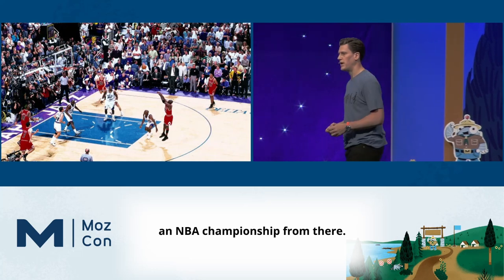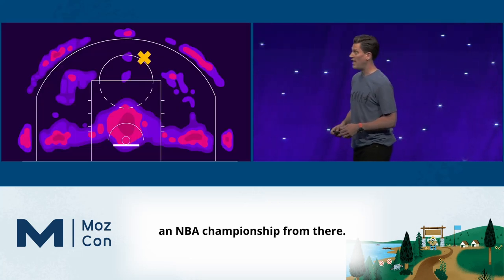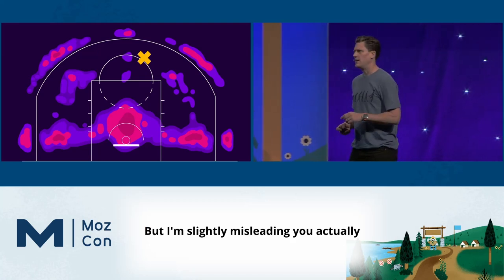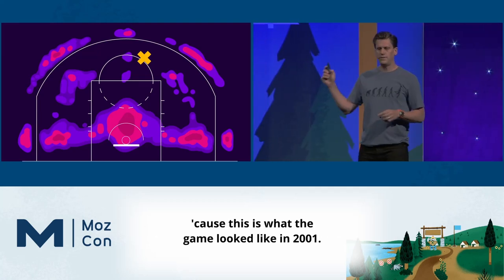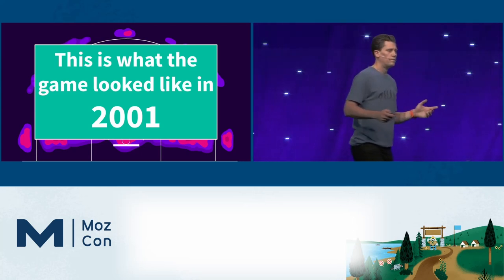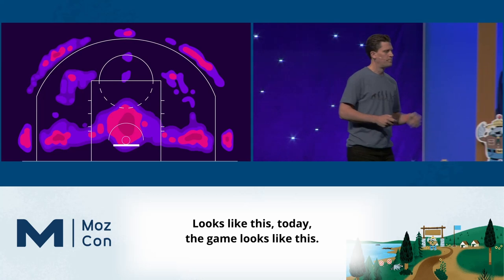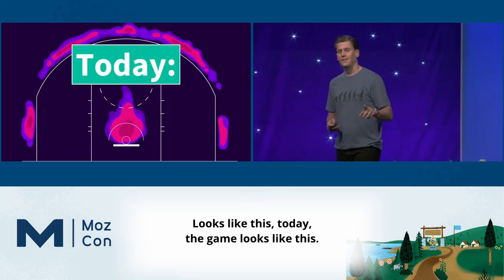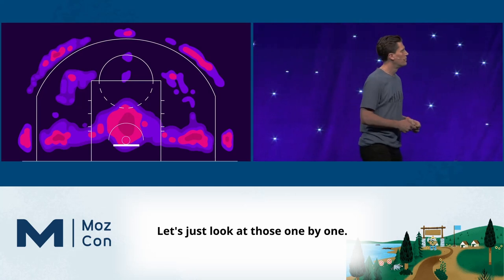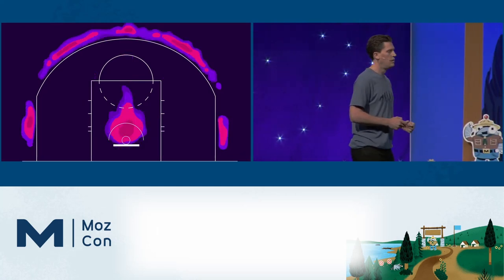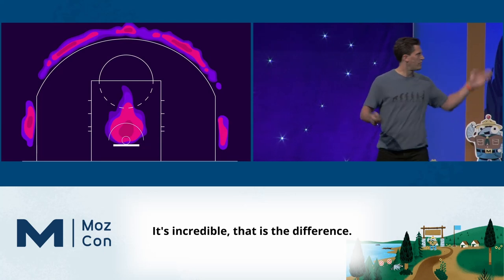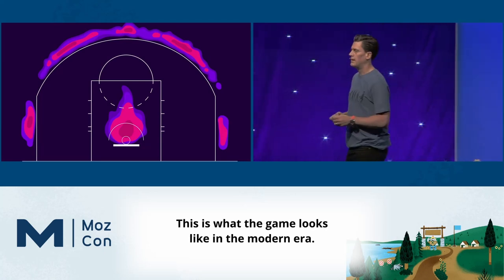This is Michael Jordan winning an NBA championship from the midrange. But I'm slightly misleading you, because this is what the game looked like in 2001. Today, the game looks like this. Let's look at those one by one — it's incredible. That is the difference. This is what the game looks like in the modern era.